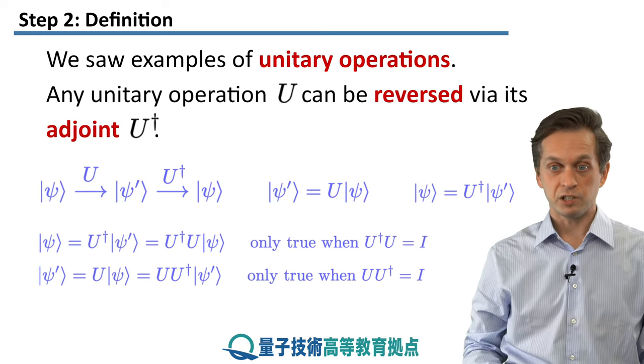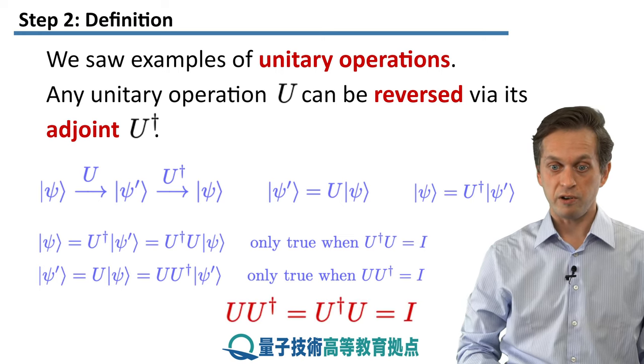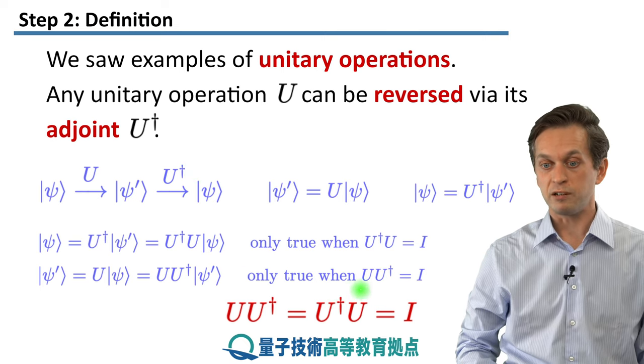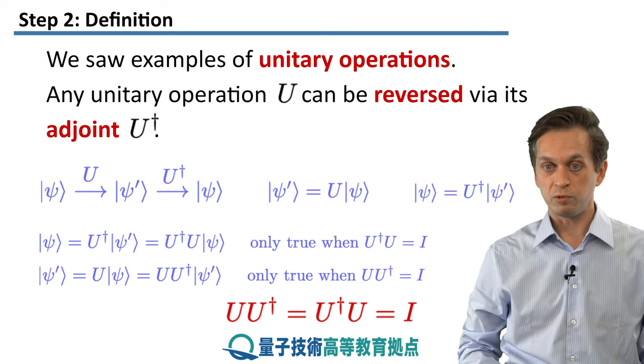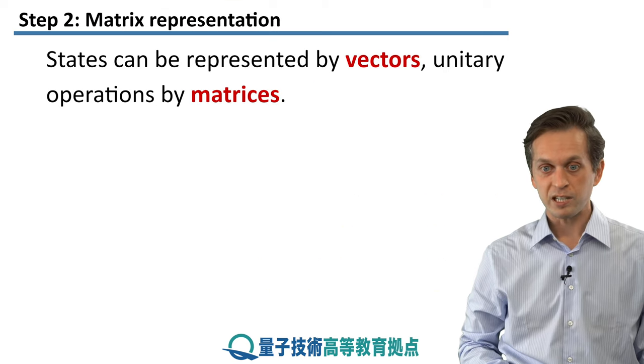And that's precisely the definition of unitary operations. There you go. That U times U† must be equal to U† times U, and that is equal to the identity. Let's move on.